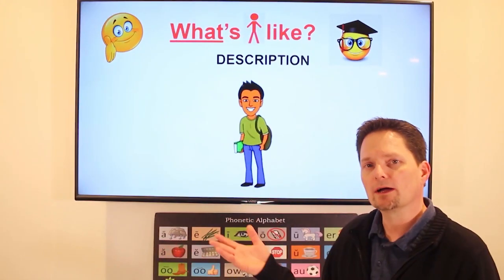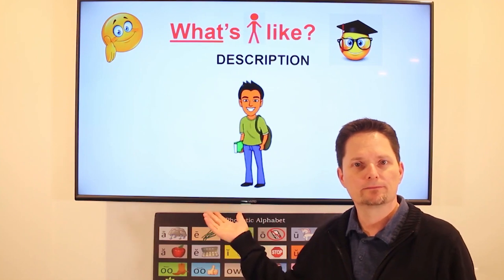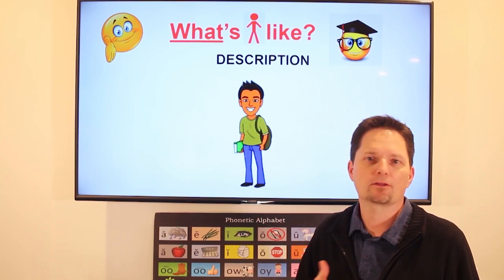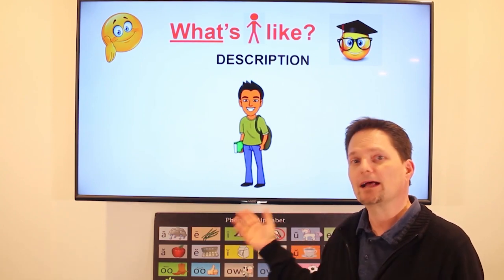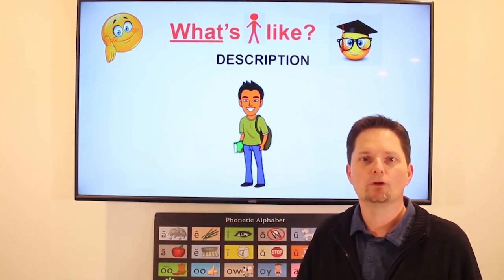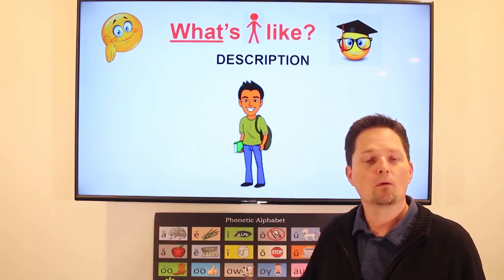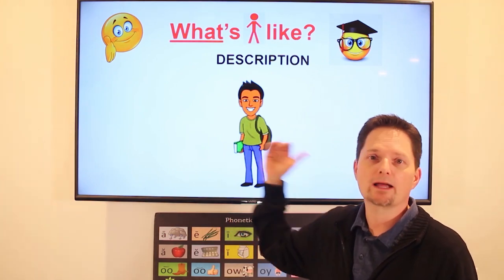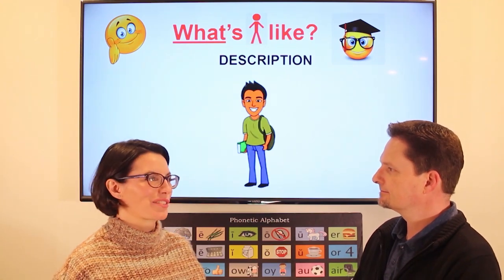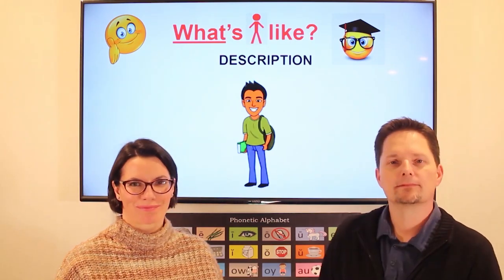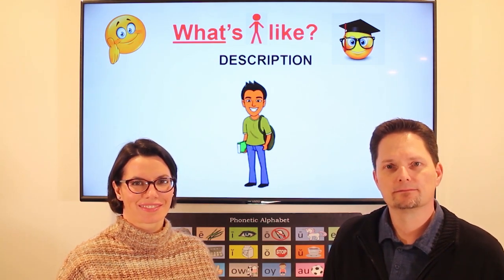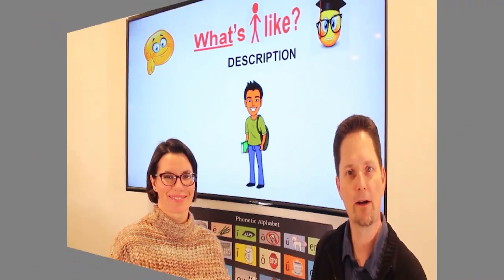If your friend has a new boyfriend, you don't ask 'How is he?' — that only means good or bad. Instead, say 'What's he like?' — it's a question for description, you want more information. What's he like? Oh, he's really smart and he's very nice. So you have a new friend — what's he like?